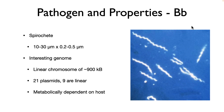Let's talk about the pathogen and its properties. Unlike any of the other pathogens we've talked about, B. burgdorferi is a spirochete, which means it has a corkscrew morphology — these long corkscrew-shaped cells. This corkscrew shape is important in its pathology, as you will see in a minute.